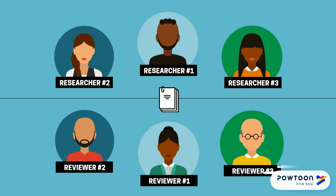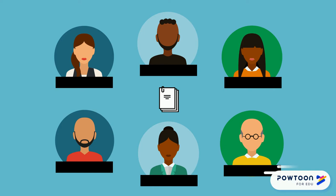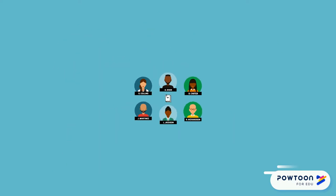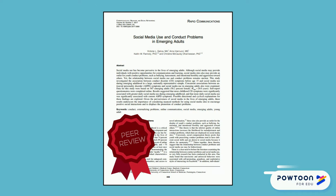It's not guaranteed that their critiques will be totally free of bias. Some scholars, especially in the sciences, are advocating for open review, where people can see who each other are, which they believe makes the process more transparent. Peer review adds a lot of credibility to the research, but it isn't a perfect process.